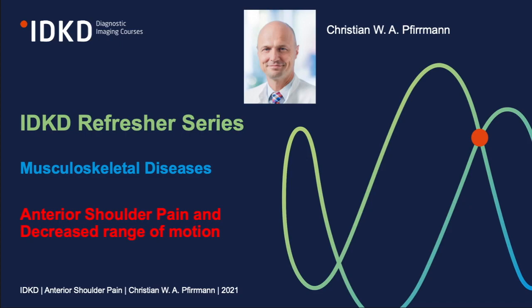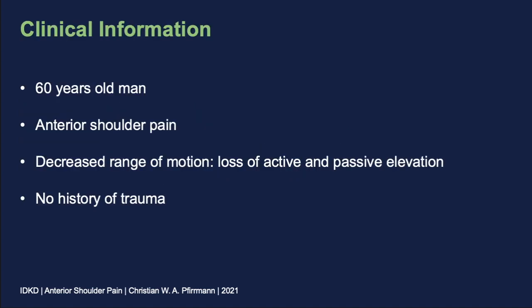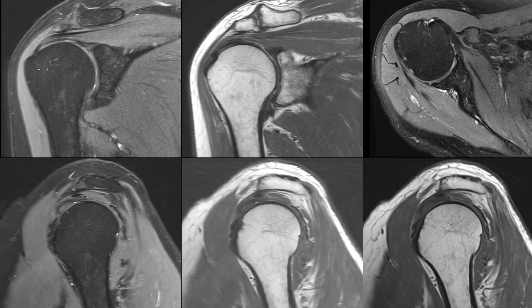Welcome to the IDKD refresher series. A new case on musculoskeletal diseases: a patient with anterior shoulder pain and decreased range of motion. My name is Christian Fuhrmann from Zurich, Switzerland. Our case today is a 60-year-old man with anterior shoulder pain, decreased range of motion, and loss of active and passive elevation without any history of trauma. The patient was referred for standard MR imaging of his right shoulder.